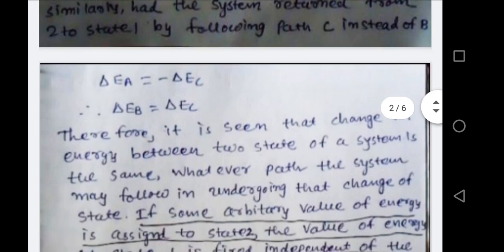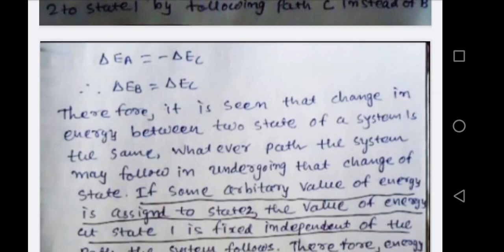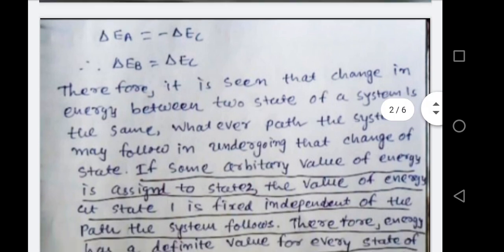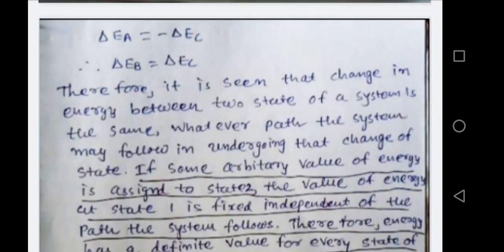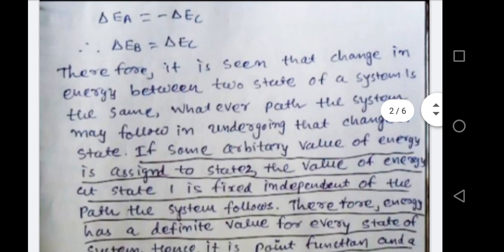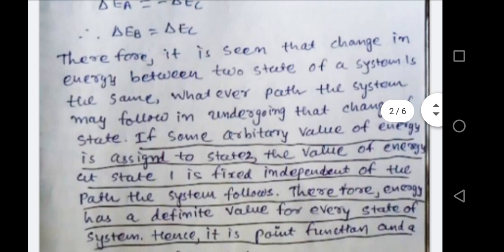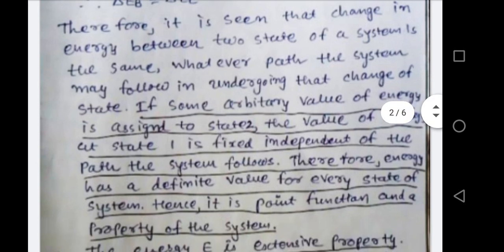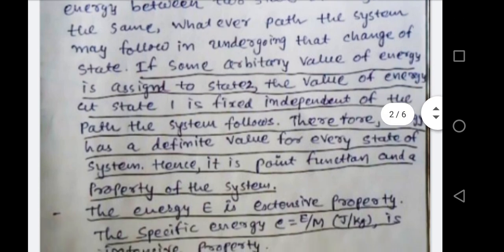Therefore it is seen that the change in energy between two states of the system is the same whatever path the system may follow in undergoing the change of state. If some arbitrary value of energy is assigned to state 2, the value of energy at state 1 is fixed independent of the path. Therefore energy has a definite value for every state of the system — hence it is the point function and a property of the system.